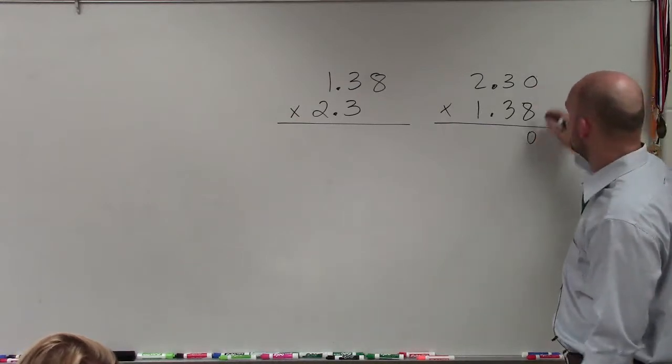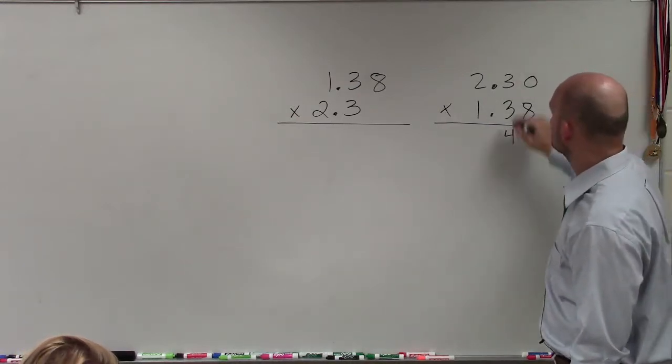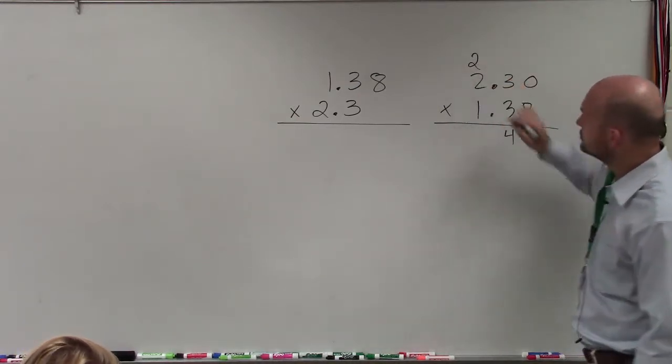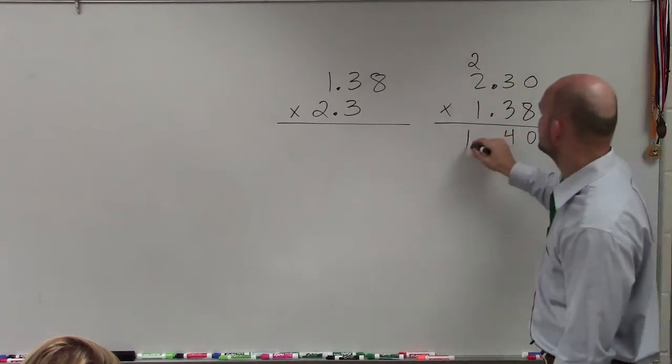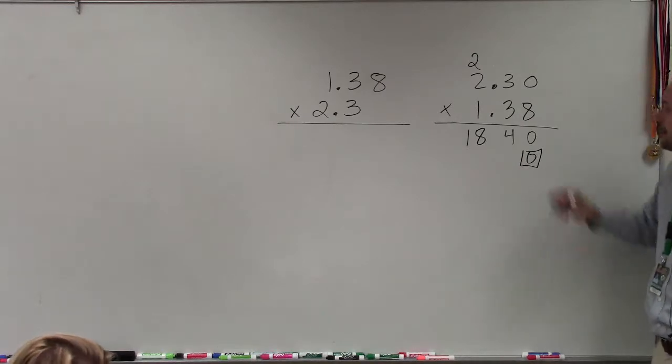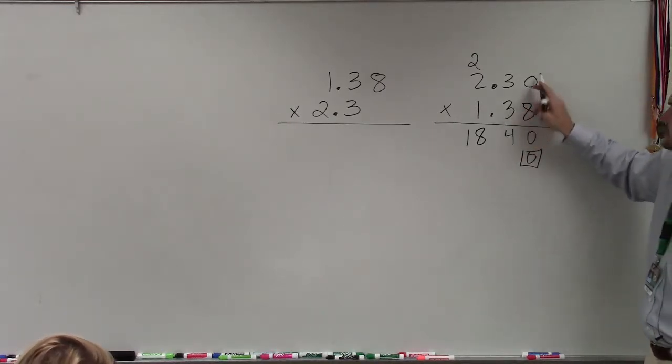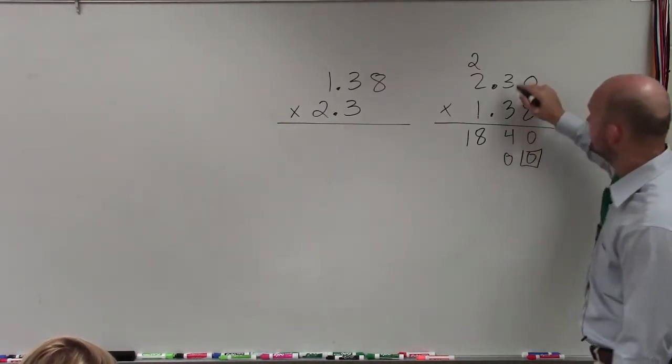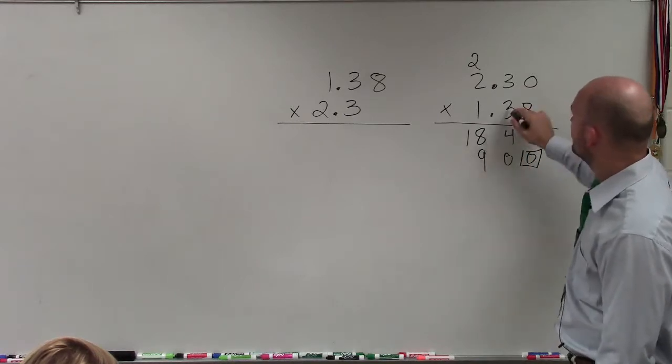So 8 times 0 is 0. 8 times 3 is 24. 8 times 2 is 16. Plus 2 is 18. Put in your place value. Then move over to the next digit. 3 times 0 is 0. 3 times 3 is 9. 3 times 2.